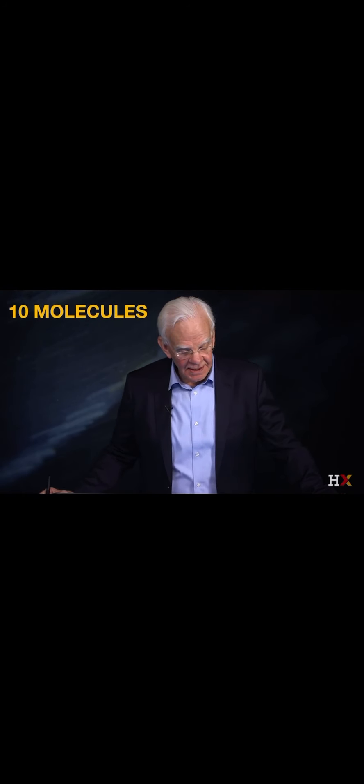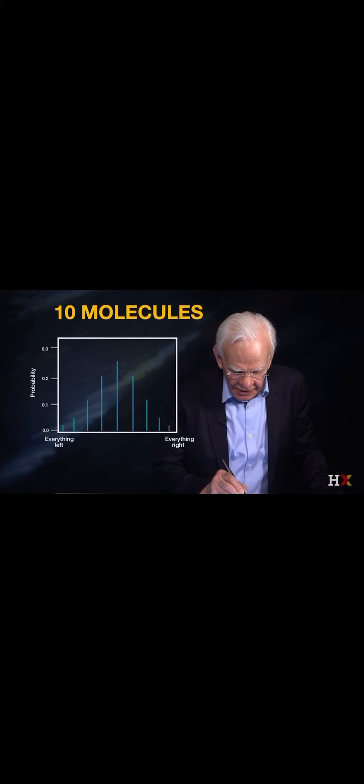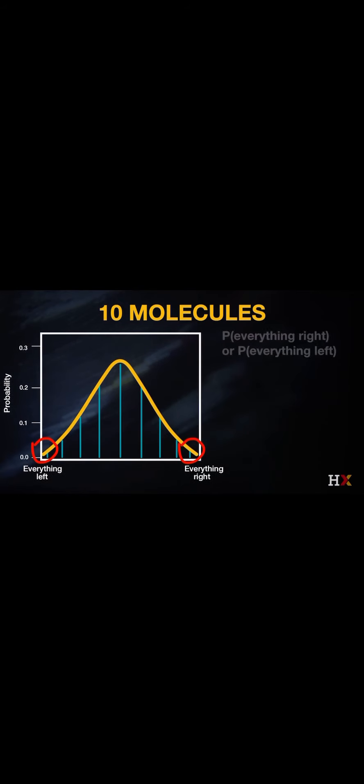And if we go to 10 molecules, we see that this is even more significant. If I look at the distribution of probabilities for 10 molecules, if I have everything on the right and everything on the left, then I can immediately calculate the probability of that, because we've already done that.